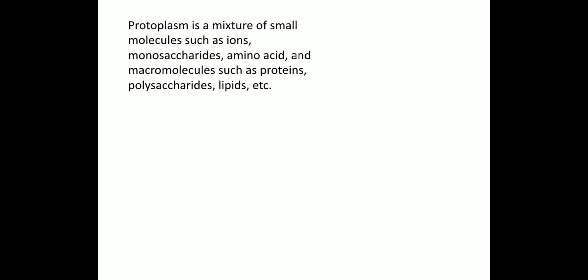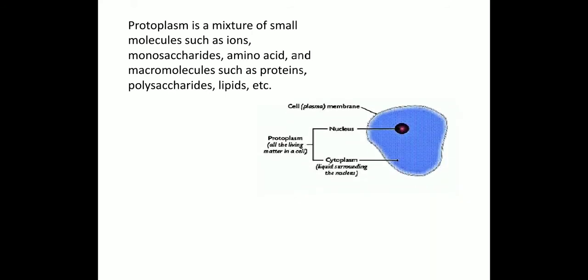Now moving to protoplasm. Protoplasm is a mixture of small molecules such as ions, monosaccharides, amino acids, and macromolecules such as proteins, polysaccharides, lipids, etc. All these ions and living components are present in the protoplasm, whereas cytoplasm is only providing a jelly-like substance to float different organelles.